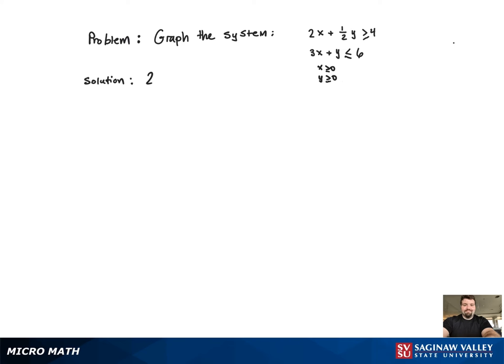For this system of inequalities, we're going to begin with the first inequality. To graph that inequality, we need to switch it to an equation and graph the line. To graph a line, you need two points.